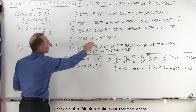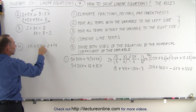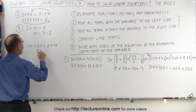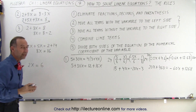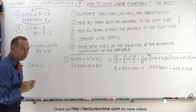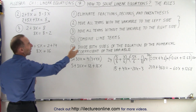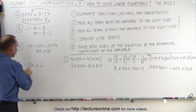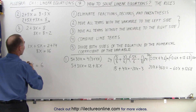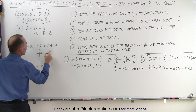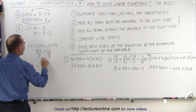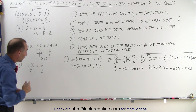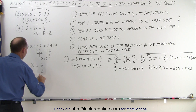Rule number 4 tells us to combine like terms on both sides. On the left side we only have terms with the variable; on the right side we only have terms without the variable. So 3x plus 5x equals 8x, and 2 plus 4 equals 6. The left and right sides are each reduced to a single term. Finally, rule number 5: divide both sides by the numerical coefficient of the variable. Here the coefficient is 8, so we divide both sides by 8, giving x equals 2. In another example, the coefficient is 2, so 2x divided by 2 is x, and 6 divided by 2 equals 3.